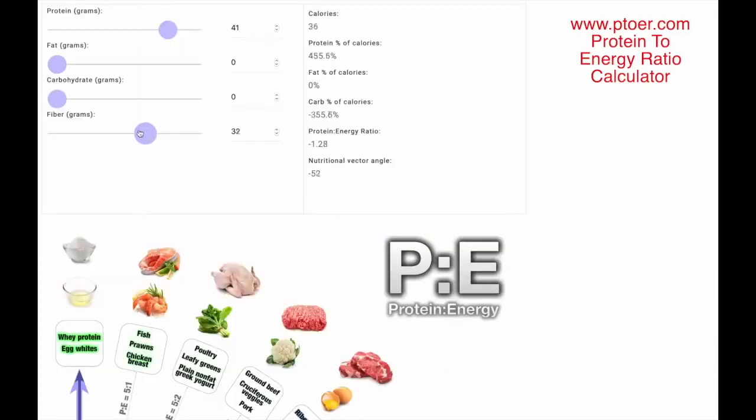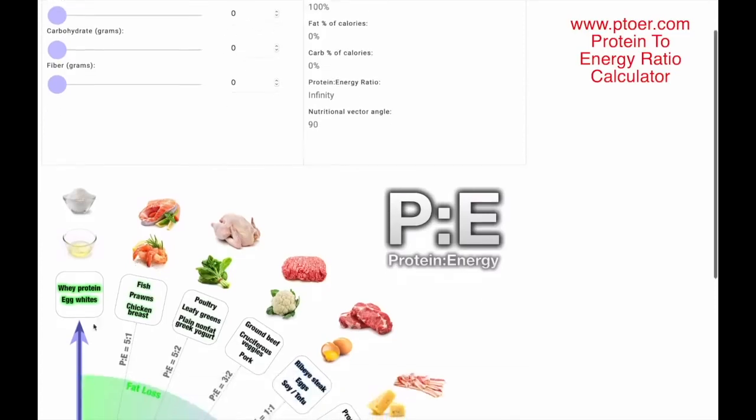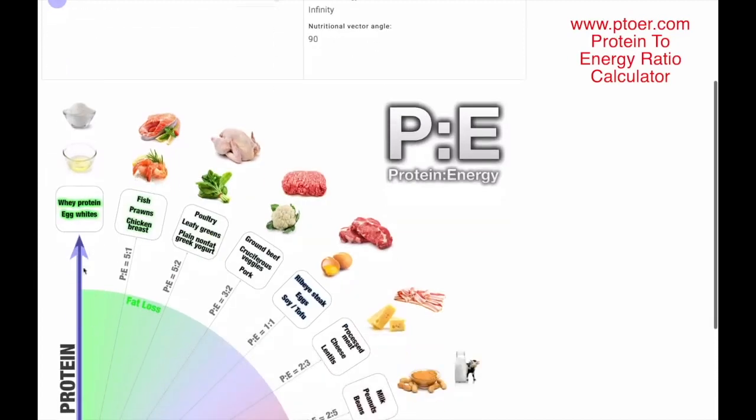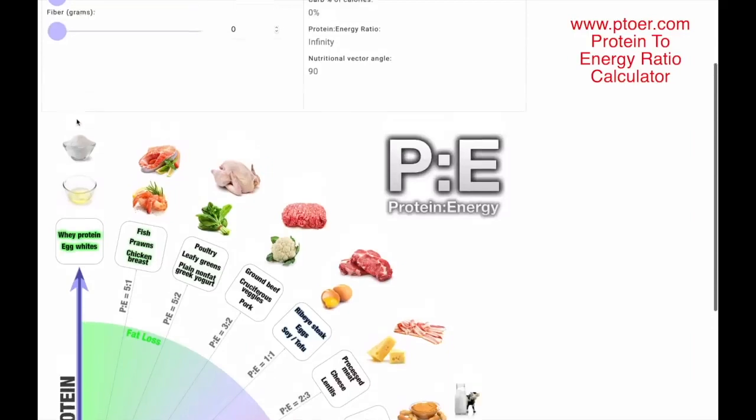With this calculator you can increase and decrease the fat, protein, and carbs. So in this example I'm going to take the protein all the way up to 50 grams and you can see the purple arrow is right here. So this is pure whey protein, this is pure egg white, that's all protein, no fat, no carbs.